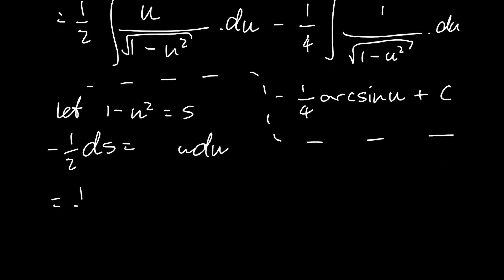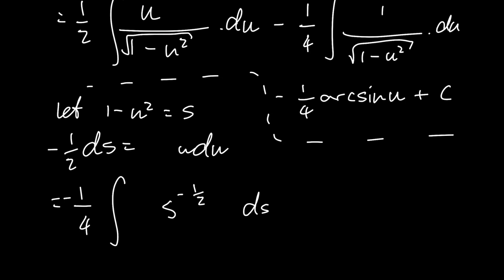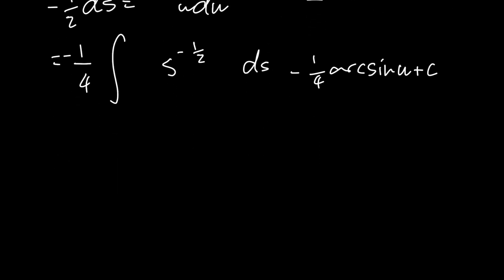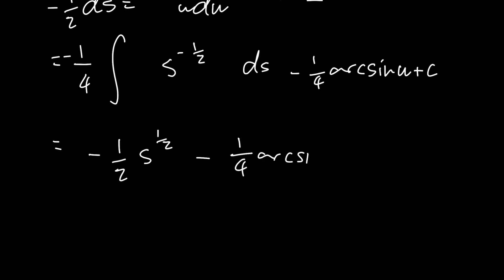Let's make that substitution. We have 1 over 2 into the integral — for u du we substitute in minus 1 over 2 ds, and inside the square root we substitute in s. The negative 1 over 2 comes out as a constant, giving us minus 1 over 4. The square root of s is s to the power of 1 over 2, which in the denominator is s to the negative 1 over 2 in the numerator. We integrate: add 1 to the exponent and divide by it. Negative 1 over 4 divided by 1 over 2 gives minus 1 over 2. And then minus 1 over 4 arc sine of u plus c.